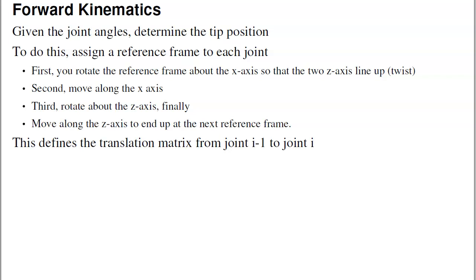To do that, you go reference frame to reference frame. There's a standard for defining reference frames so that each robotics engineer comes up with the same answer for figuring out where the tip is. The standard is to go from reference frame 1 to the next reference frame: you rotate about the x-axis — that's the twist — then move along the x-axis, rotate about the z-axis, and move along the z-axis. That defines the transformation matrix from joint i to joint i plus 1, covering both rotations and translations.